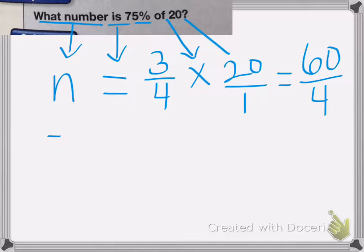So 60 divided by four is 15. So 75% of 20 is 15.